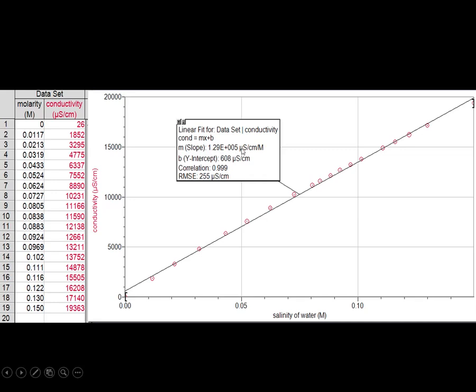What the slope is saying is that if I change the salinity, the amount of ion concentration, by one molarity, it changes the electrical conductivity by 1.29 times 10 to the 5th microsiemens per centimeter.